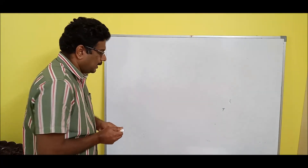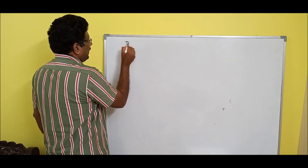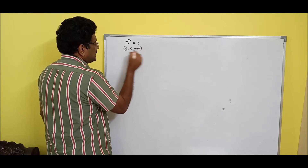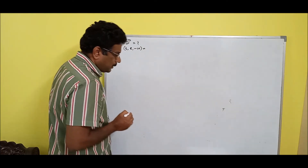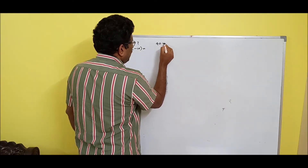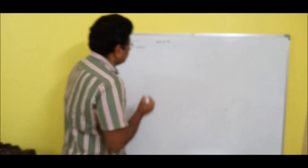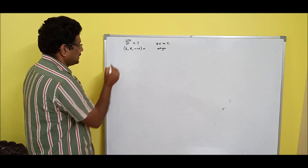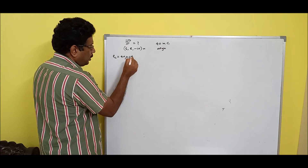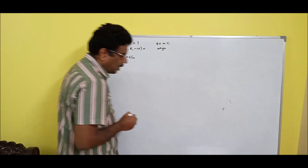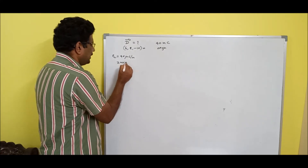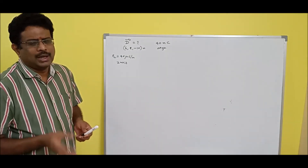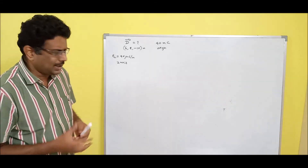Let us do another problem. Find the electric flux density D at (6, 8, -10) meters due to a point charge of 40 millicoulombs located at the origin, and a uniform line charge of rho-L equal to 40 microcoulombs per meter along the z-axis. This is the same type of problem we did for electric field intensity. Now we do it for density: D equals epsilon-not times E, just multiply by epsilon-not and you will get the answer.